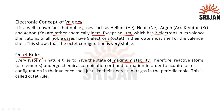According to the octet rule, reactive atoms undergo chemical combination or bond formation in order to acquire octet configuration in their valence shell, just like that of their nearest inert gas in the periodic table. Every element or atom therefore tends to attain the electronic configuration of the nearest inert gas.